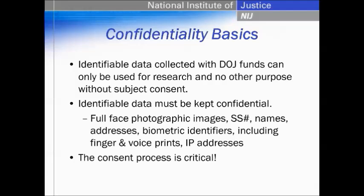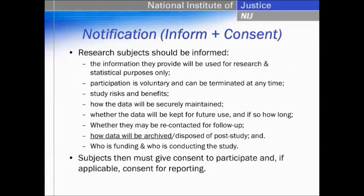The consent process is critical. It is a process — it's not simply giving them a consent form and having them sign it. There is a process of notification and the types of things that must be included, which we will talk about as well. The types of data that are archived include quantitative data and qualitative data. Some of the qualitative data would not necessarily need to be archived, but if you are going to archive it, consent needs to be obtained for that.